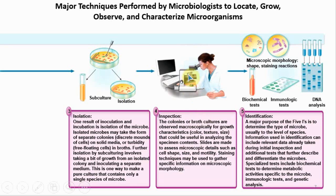Inspection: this person is using a microscope, but there are lots of other ways to do it. Looking at cultures under a microscope or looking at the colonies is pretty much inspection. Identification — there are a lot of different ways we can identify microorganisms. One is using a microscope, but others include biochemical tests, which we'll get to at the end of the chapter, and immunologic tests, some of which can be done right in the doctor's office nowadays.